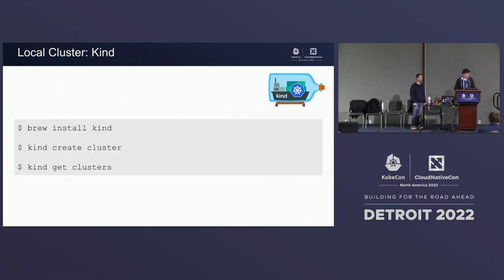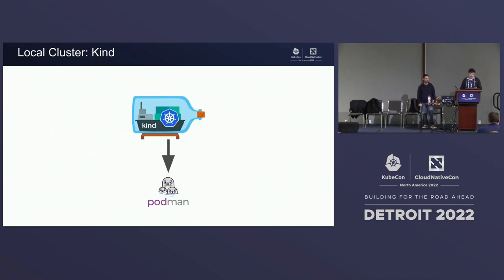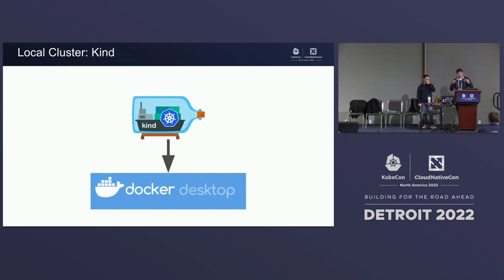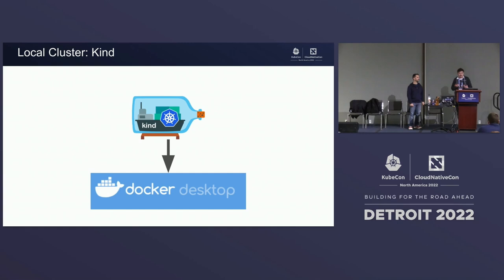There's one caveat with KIND: KIND itself is deployed as Docker containers, so you need to have Docker Engine somehow running on your laptop. But it's not free anymore with Docker Desktop. So for Mac and Windows users, you need to find a solution where you can deploy that Docker image that spins up the Kubernetes cluster. We found the solution, which is called Podman.